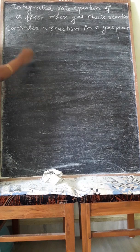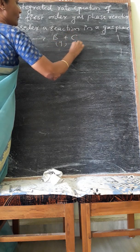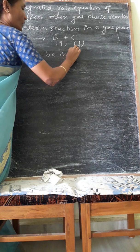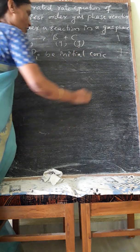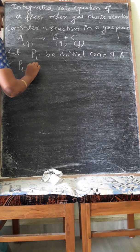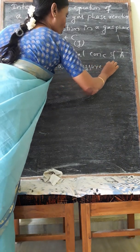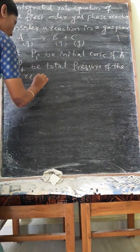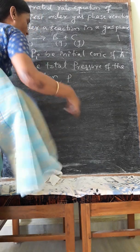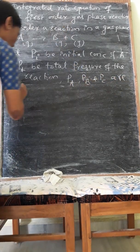Consider a reaction in a gas phase: A (gas) giving product B (gas) plus C. Let PI be the initial concentration of reactant A and PT be the total pressure of the reaction, where PA, PB, and PC are partial pressures.